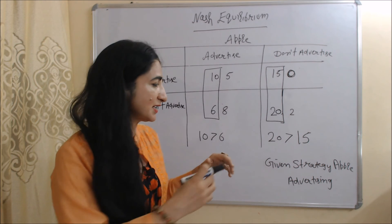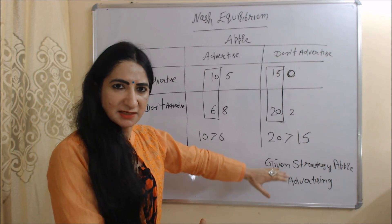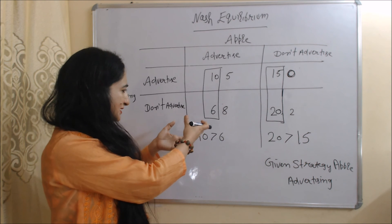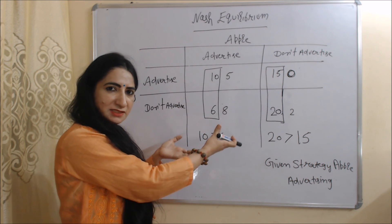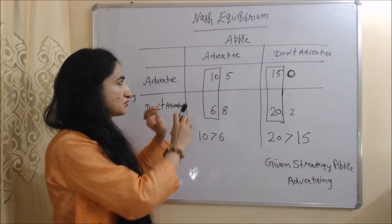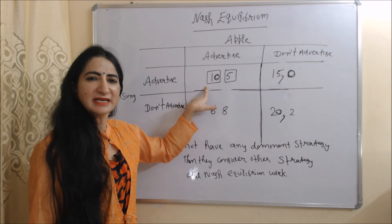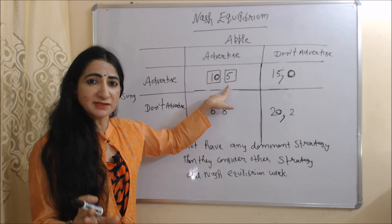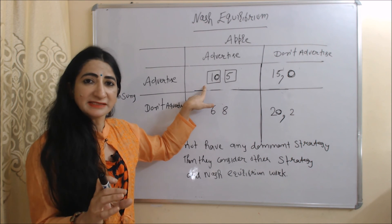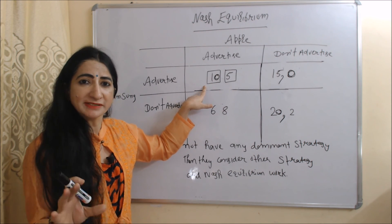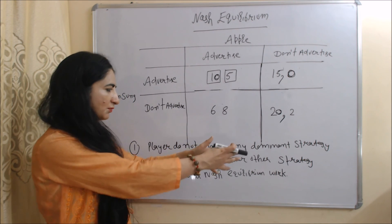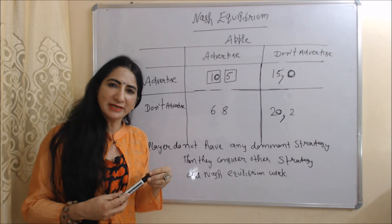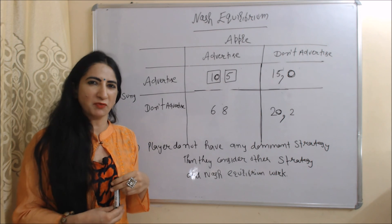Since Samsung doesn't have a dominant strategy, Samsung will consider Apple's strategy, which is advertising. After considering Apple, Samsung will analyze its situation — yes, advertising is also good for Samsung because the outcome of advertising is greater. So Samsung will also advertise. This is our Nash equilibrium point where both firms are advertising. Apple does not consider Samsung because advertising is Apple's dominant strategy, but Samsung considers Apple because Samsung has no dominant strategy. This is all about dominant strategy and Nash equilibrium. Thank you for watching!